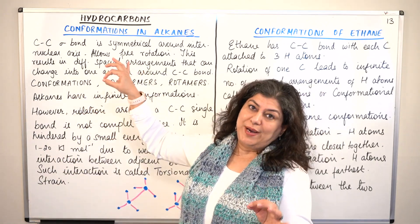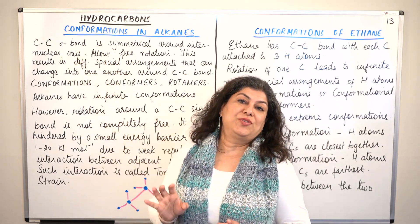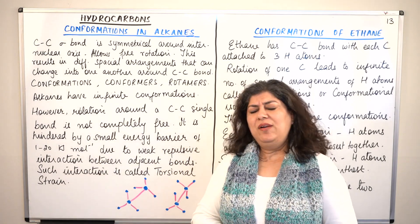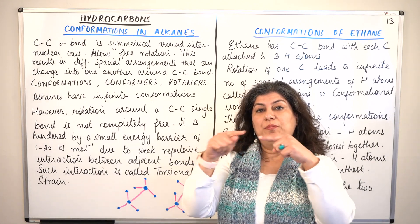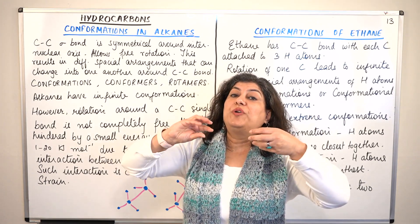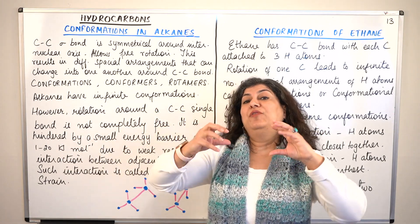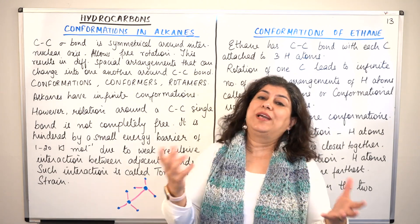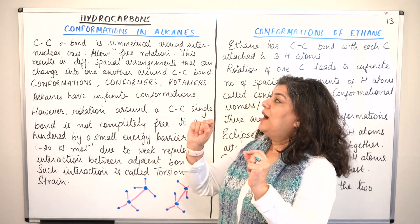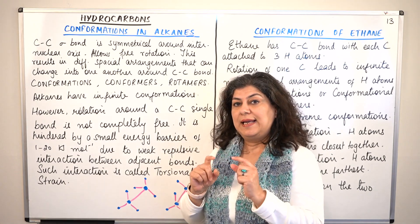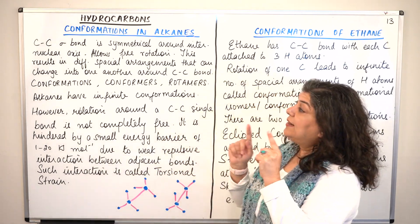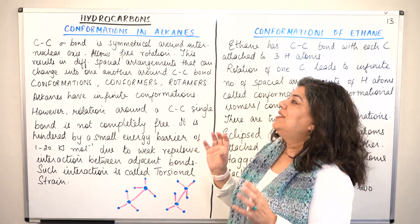One example of stereoisomerism is conformations. In alkanes we see different conformational isomers. In conformation, you can twist the carbon-carbon bond, changing the orientation of bonds relative to each other, and since the orientation changes you get different isomers. The carbon-carbon sigma bond in alkanes is a single bond, and it is symmetrical around the internuclear axis.